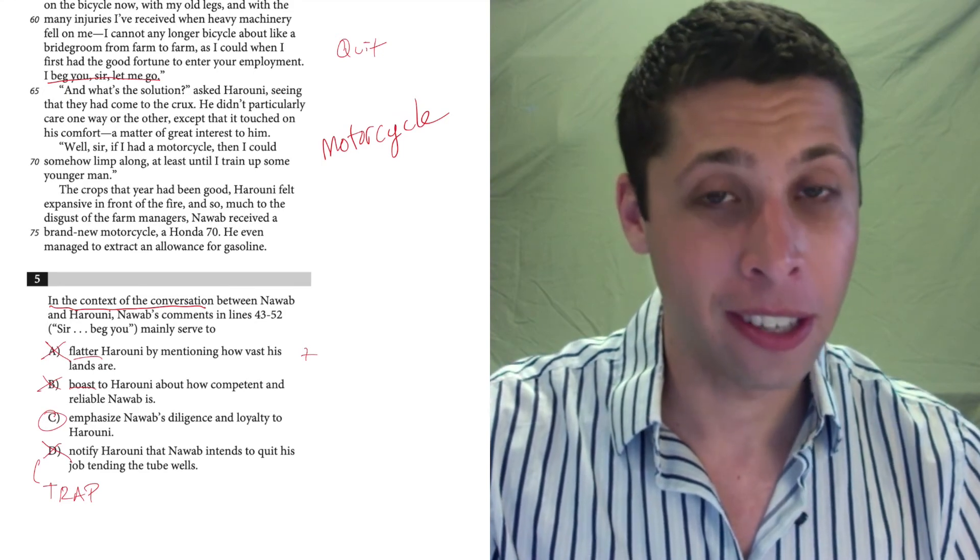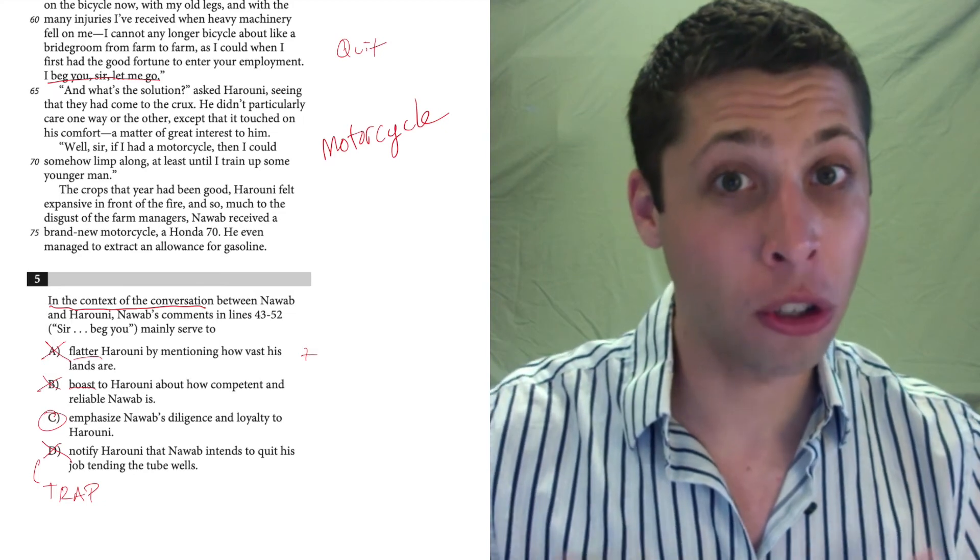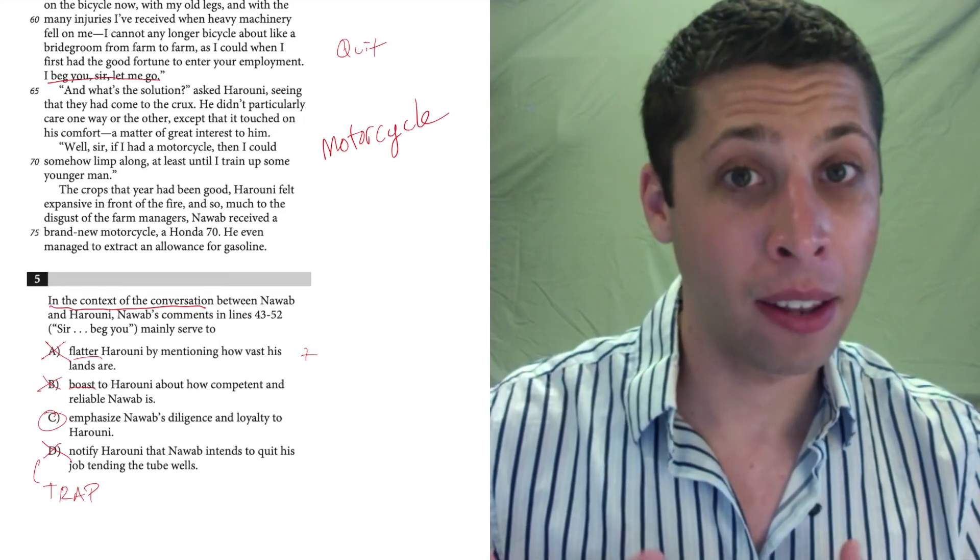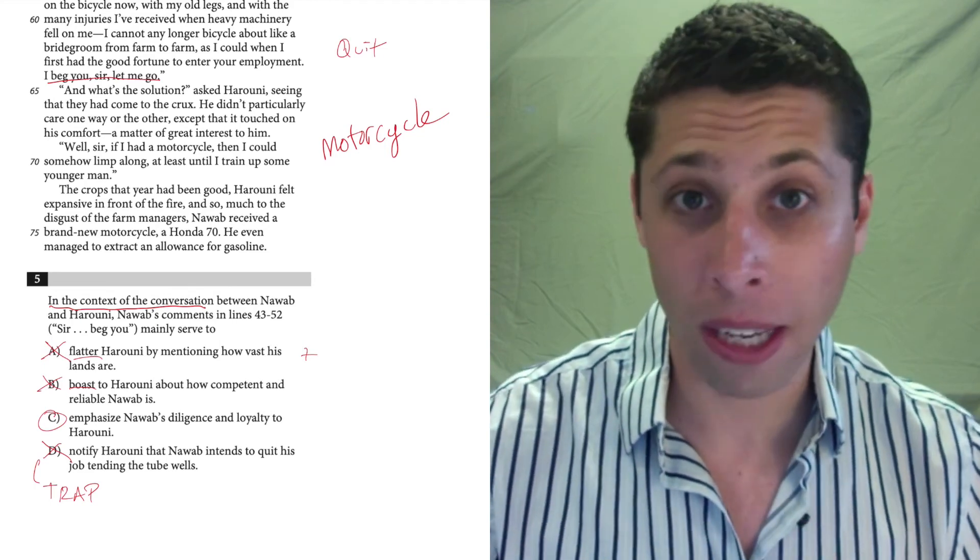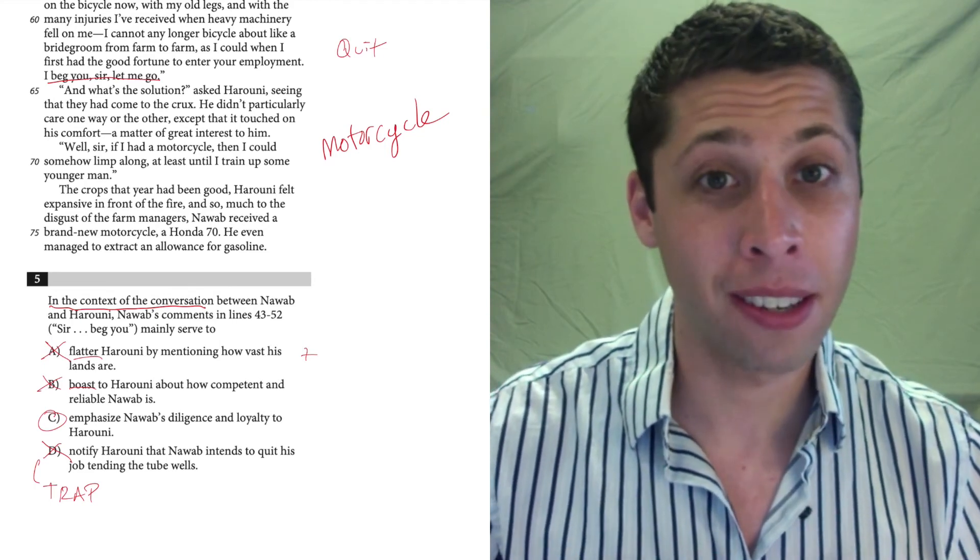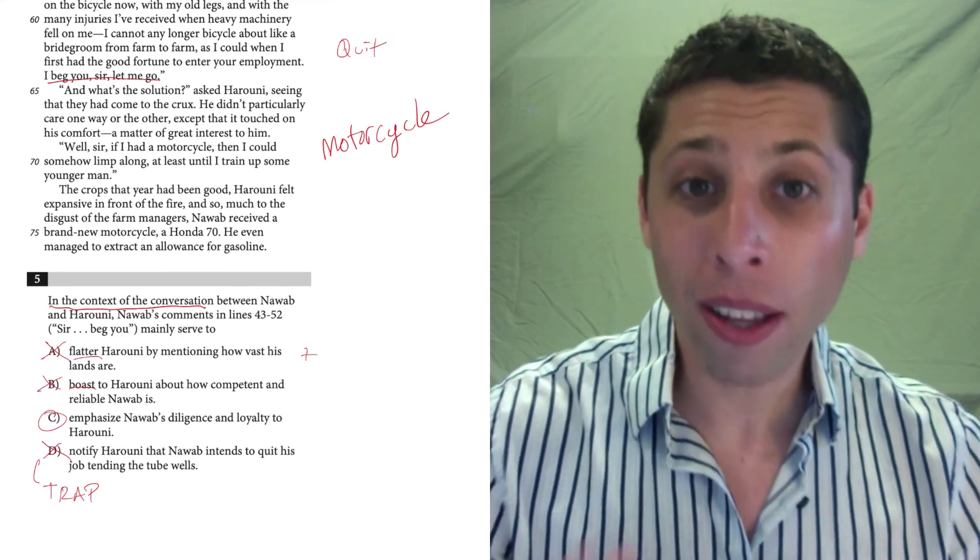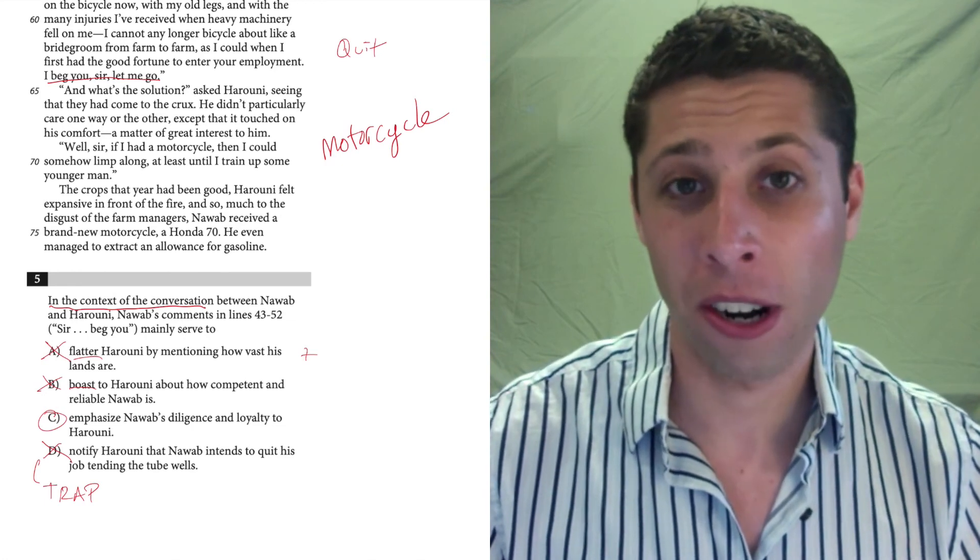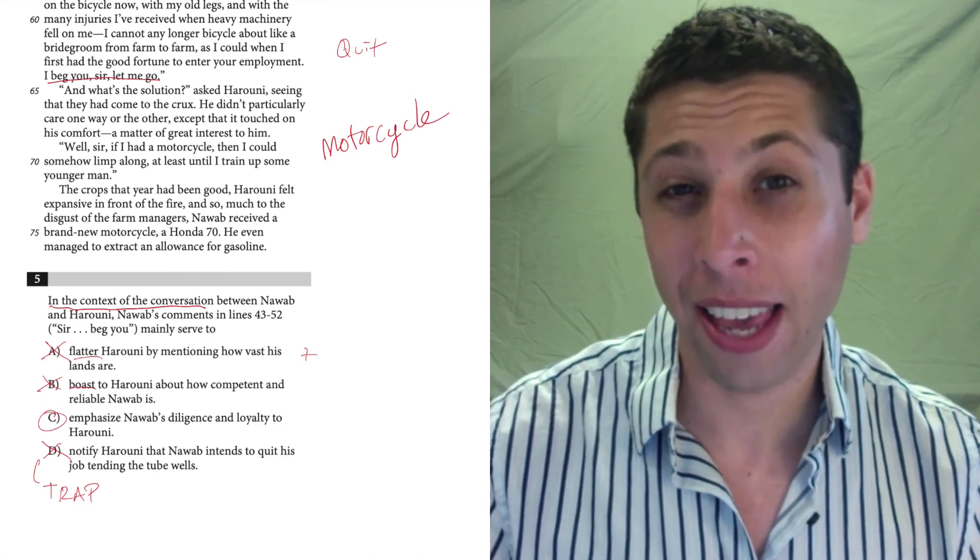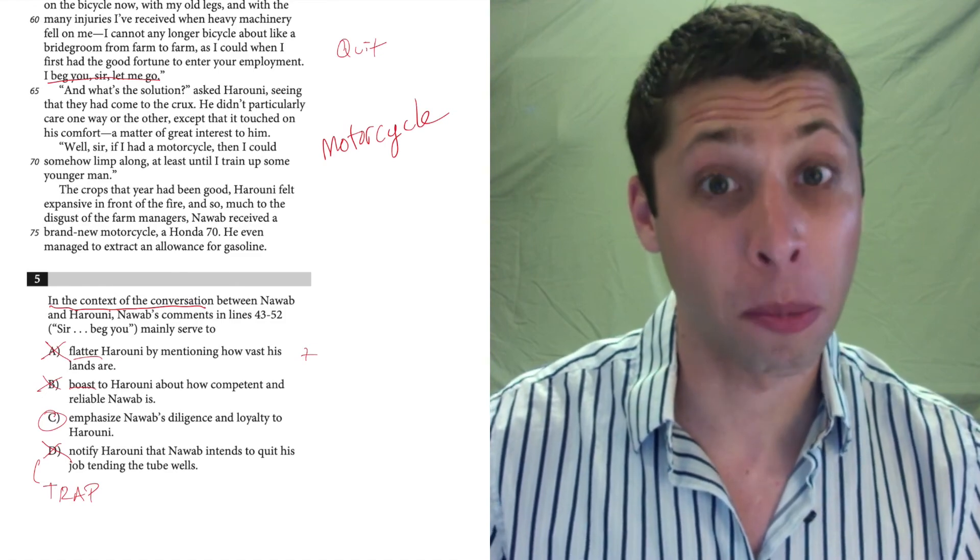So just be careful. This is something that they do a lot on the literature passage. Because remember, these are stories and these characters are real human beings. So they behave like you and me. And real human beings sometimes lie. Sometimes they joke. Sometimes they say one thing, but they mean something different. And that's why this question is hard. They usually do this kind of thing like once per SAT, once per literature passage. So just be on the lookout for it.